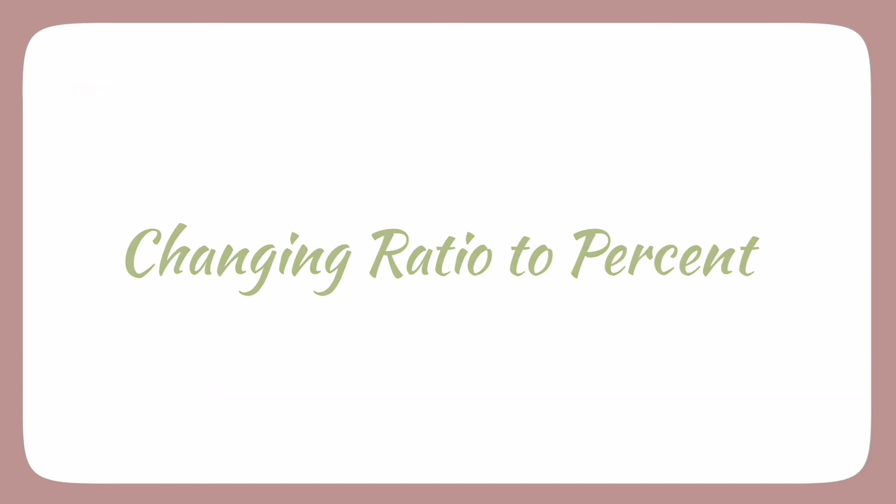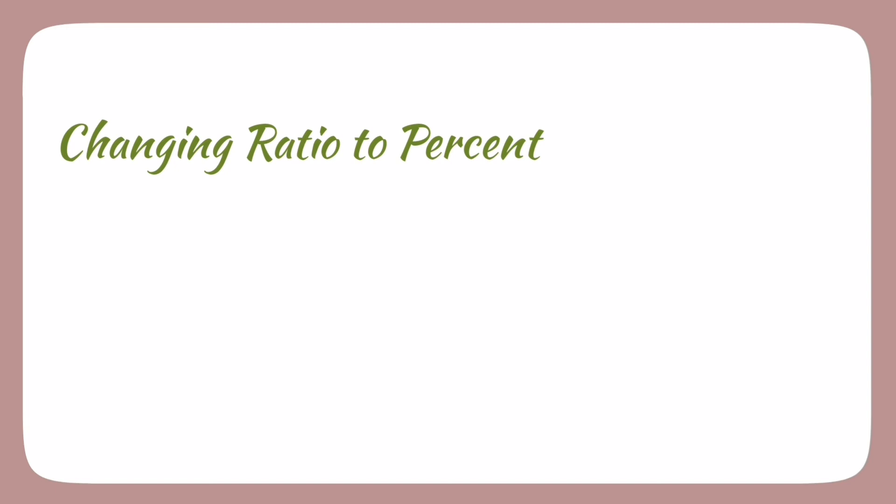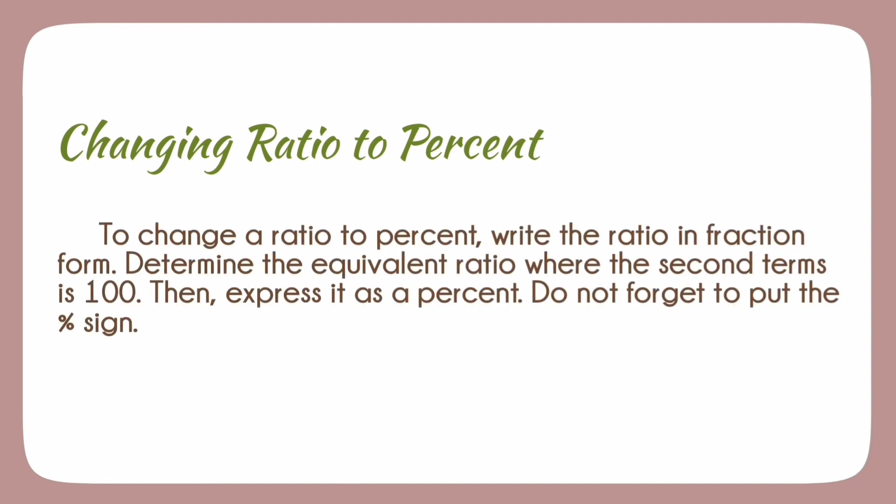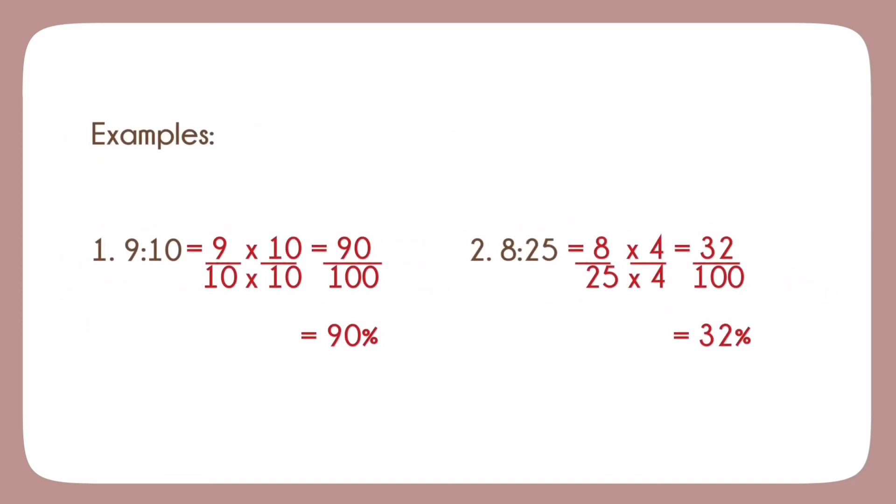Changing ratio to percent. To change a ratio to percent, write the ratio in fraction form. Determine the equivalent ratio where the second term is 100. Then, express it as a percent. Do not forget to put the sign. Here are examples. When transformed to fraction form, both the numerator and denominator will then be multiplied to a number that will turn the denominator to 100. In example number 1, the denominator is 10. So both numerator and denominator are multiplied by 10 to have a denominator of 100. Same with example number 2 with denominator of 25 is multiplied by 4 to have 100 as denominator.